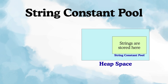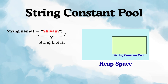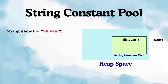Here's how it works: when you declare a string like this — string name1 is equal to shivam — this shivam part is called a string literal. Now this literal is saved inside that string constant pool. And the variable name1 will just hold the reference, basically the address that points to this shivam inside the pool. So name1 is a reference variable, and it's pointing towards the literal shivam which is there in the pool.